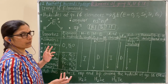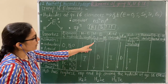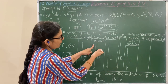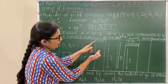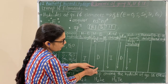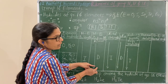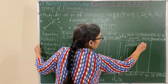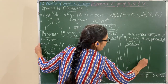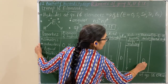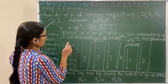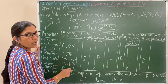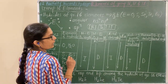Thermal stability: as dissociation enthalpy decreases, the bond breaks more easily. Therefore, thermal stability also decreases down the group. This means water is more thermally stable compared to the other hydrides of group 16.